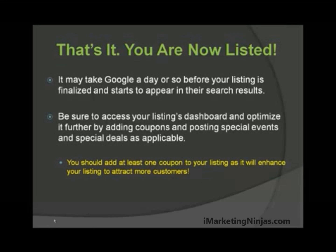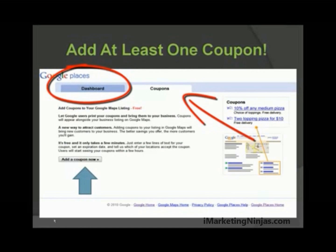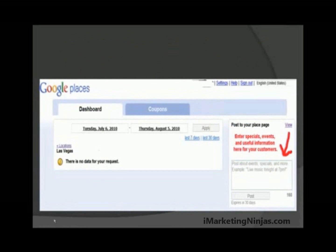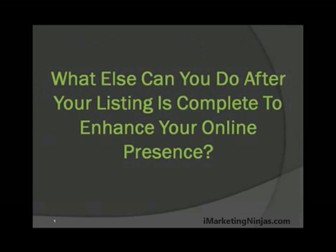Be sure to access your listing's dashboard and optimize it further by adding coupons and posting special events and deals as applicable. You should add at least one coupon to your listing, as it will enhance your listing and attract more customers. Right next to the dashboard tab is your coupons tab — add at least one coupon. You can also add events and specials as well.